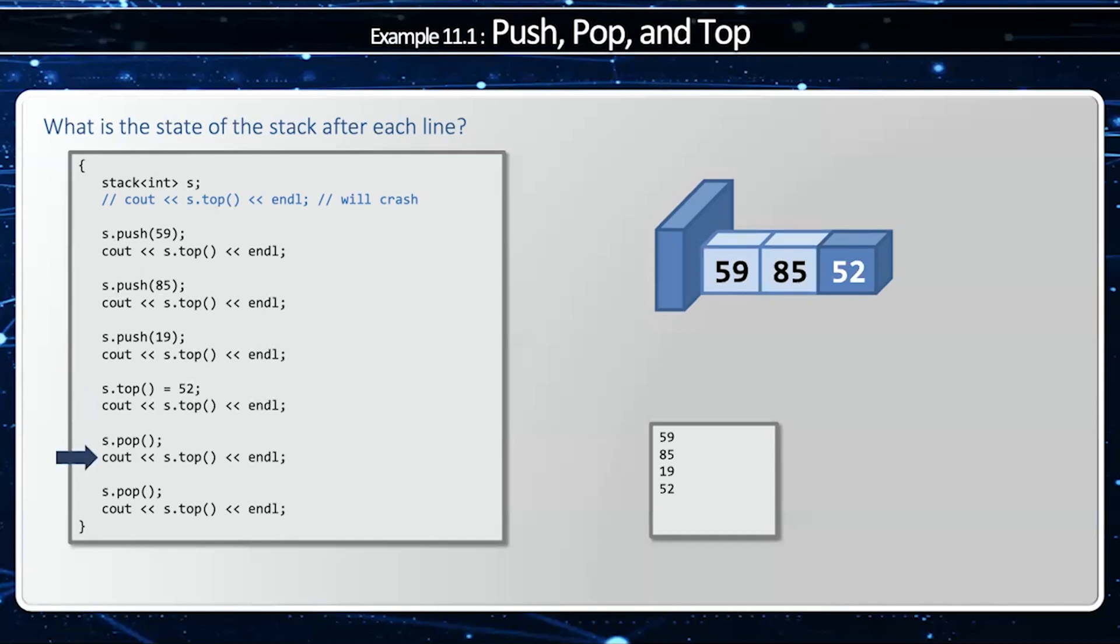When I say s.pop, I will remove the last element, in this case, 52 from the stack, which just means 85 is now the topmost element. So if I say s.top, I'll get 85.